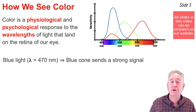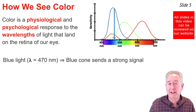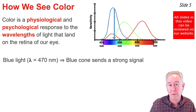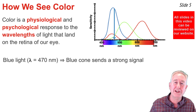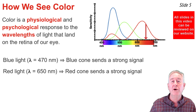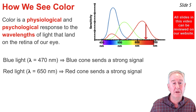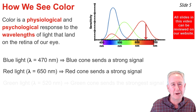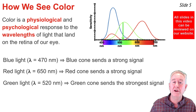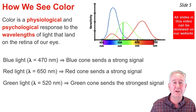As an example, consider blue light with a wavelength of 470 nm striking the retina. All three cones will respond physiologically to that wavelength, but the blue cone is most sensitive and will send the strongest signal to the brain. In contrast, consider red light with a wavelength of 650 nm striking the retina — only the red cone is sensitive to that wavelength and would send the strong signal to the brain. When green light with a wavelength of 520 nm strikes the retina, the green cone is most sensitive and sends the strongest signal to the brain.